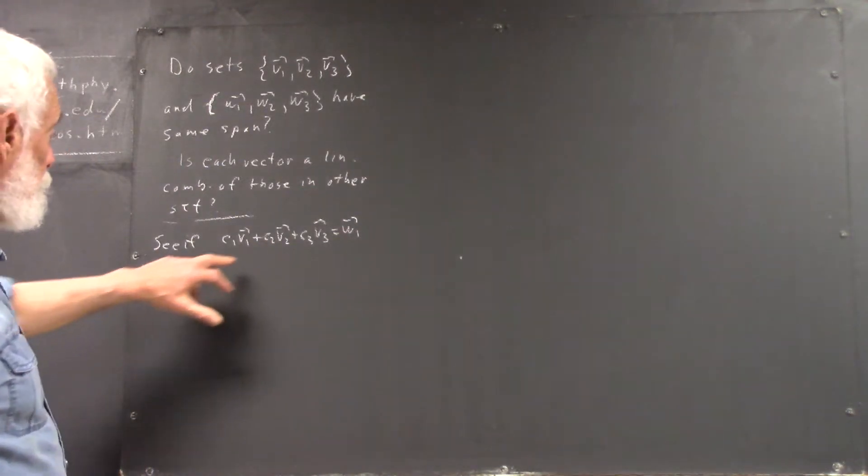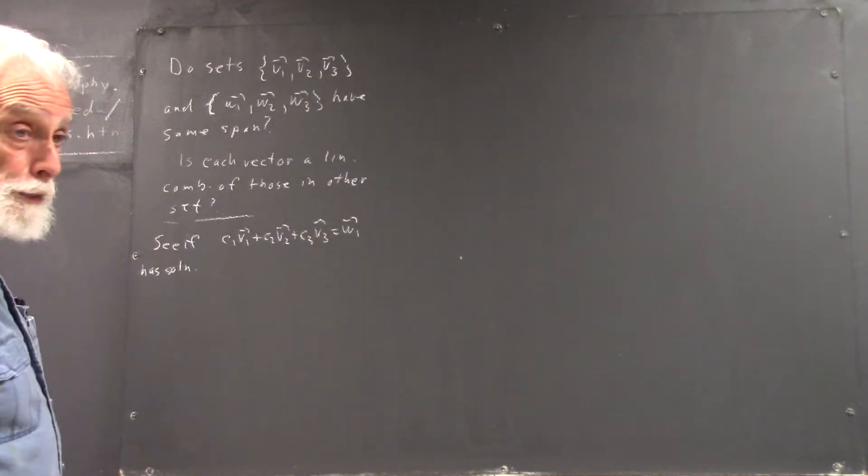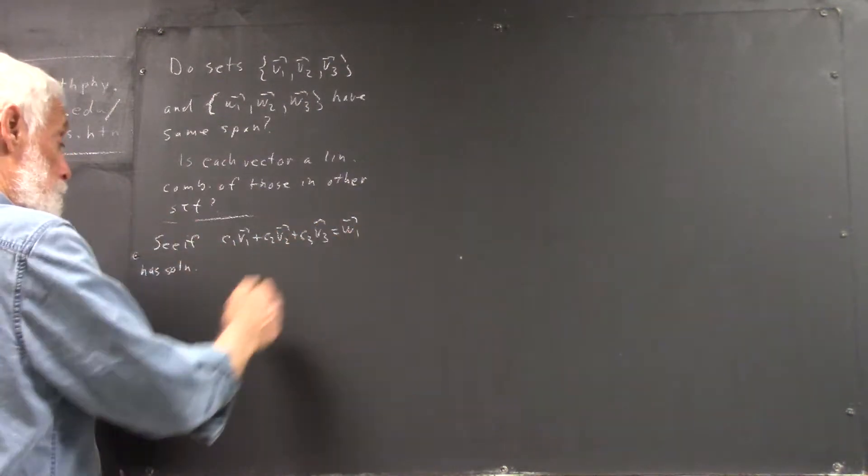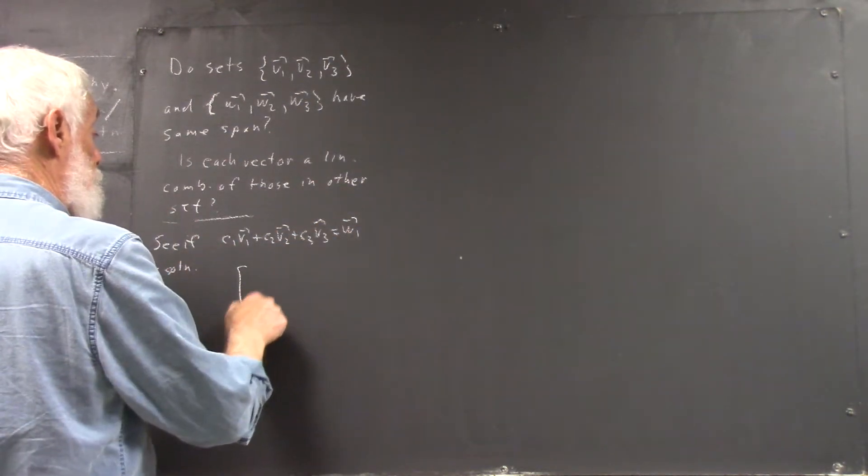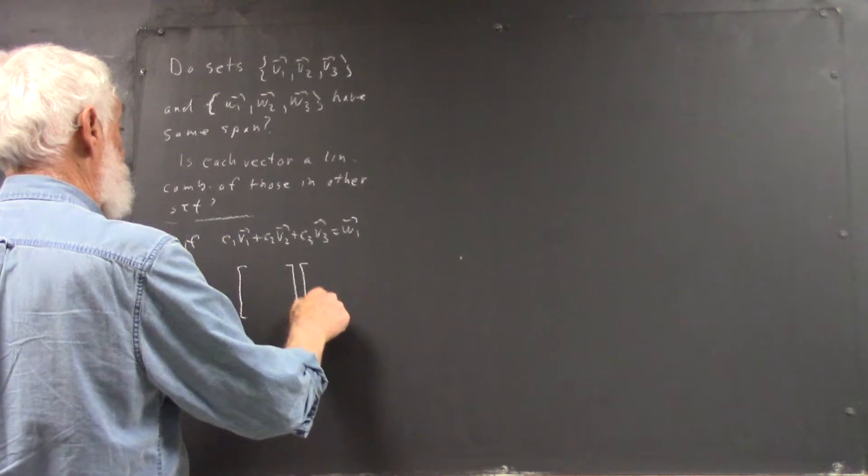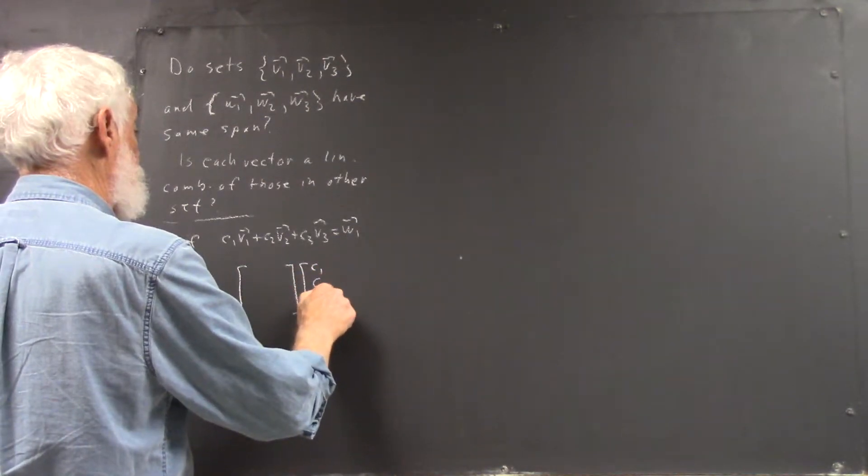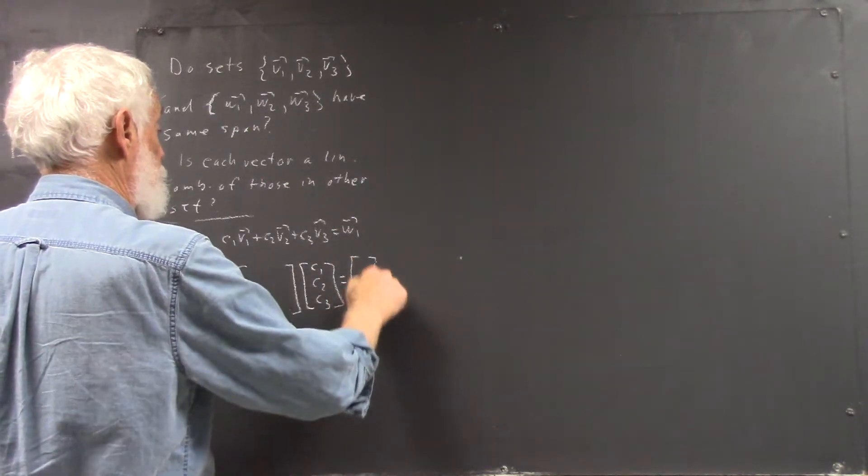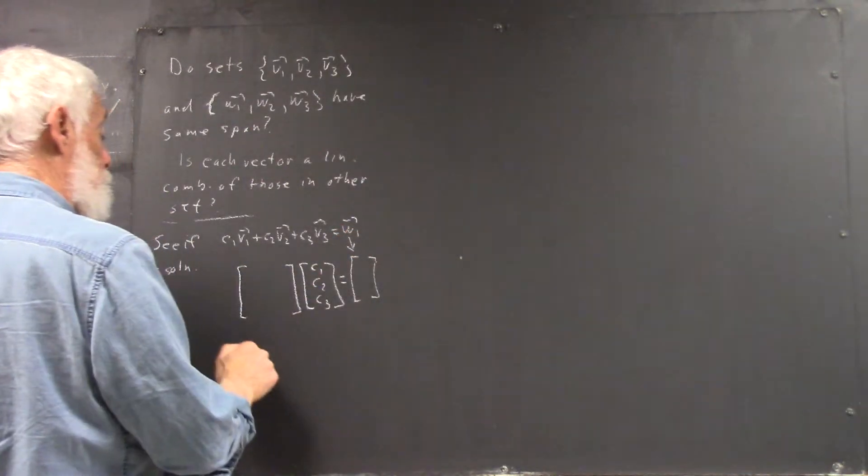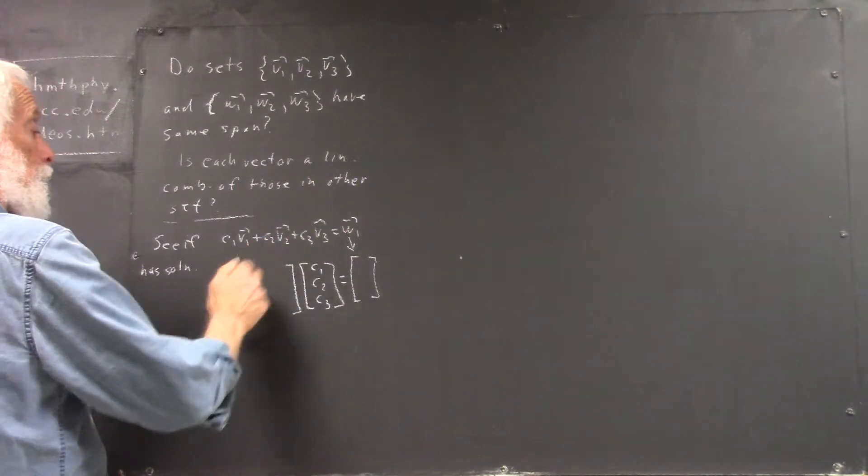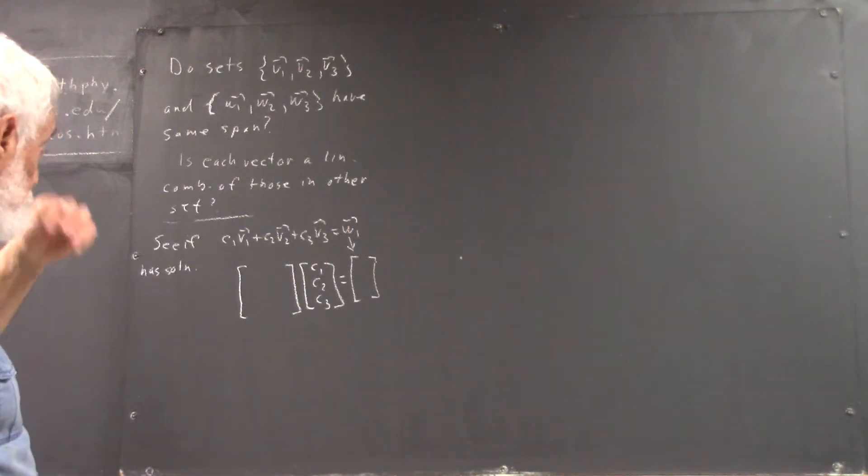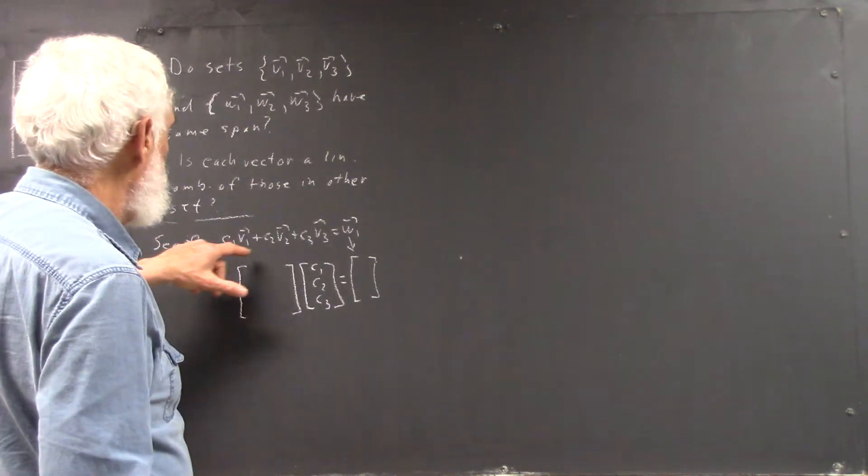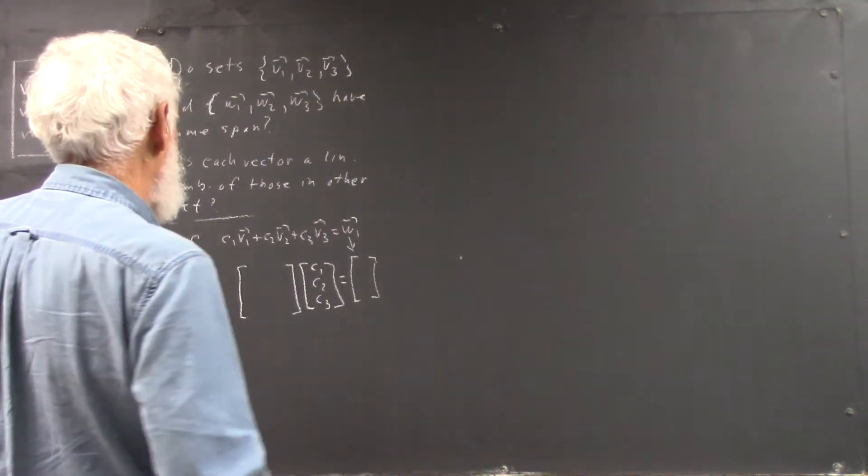See if C1B1 plus C2B2 plus C3B3 equals W1 has a solution. This can typically be written as a matrix multiplied by the C1, C2, C3 column vector equals another matrix. This one being W1 and this one being the coefficient matrix. Well, the matrix consisting of V1, V2, and V3 as column vectors.